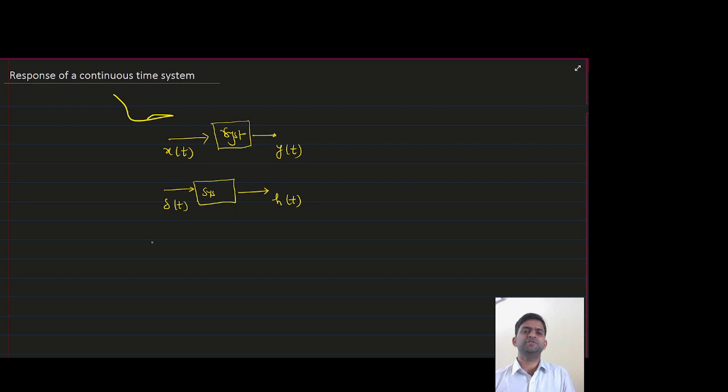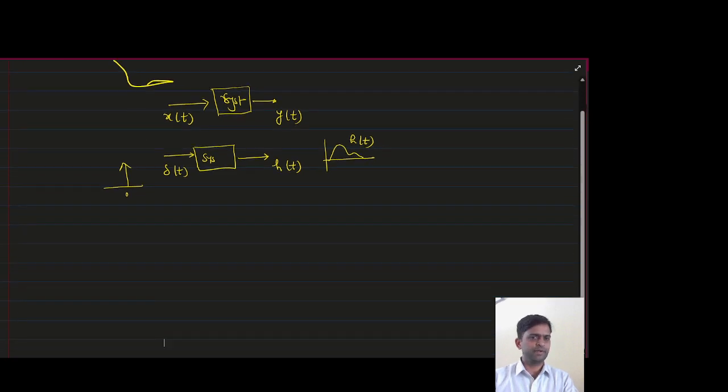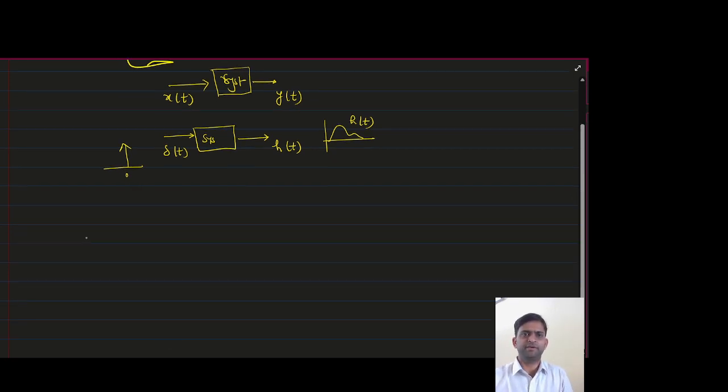So this response need not to be an impulse. You know impulse is just a peak at zero, but output will not be just peak. It will be something, some arbitrary signal. So h(t) is like this. This is nothing difficult till this point. So wherever you feel difficulty you can write it and comment. I will resolve the difficulty later on.